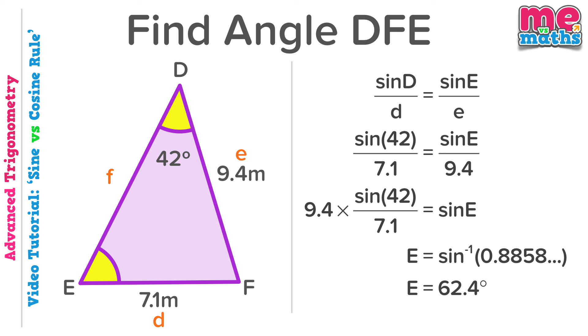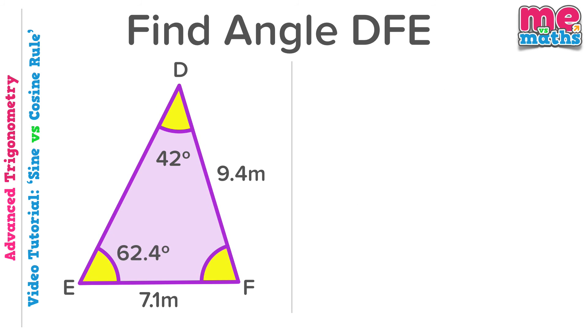Now this wasn't the angle we were being asked to find. This is the angle that we were being asked to find in the bottom right hand corner. Now it's amazing on reaching this point how many students start trying to use the cosine rule or some incredibly complex method to find this missing angle, completely forgetting the simple fact that angles in a triangle always add up to 180 degrees. So now we know our other two angles, we just need to subtract these from 180, and we'll find our angle DFE, which is actually 75.6 degrees.